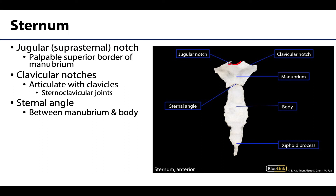Put a finger at the bottom of your neck and try to find your sternum — one of the first things you'll feel is this divot referred to as the jugular notch. This is palpable and important for clinical procedures like central line placement. Just lateral to the jugular notch, you have the clavicular notches, which are where the two clavicles articulate with the manubrium, forming the sternoclavicular joints.